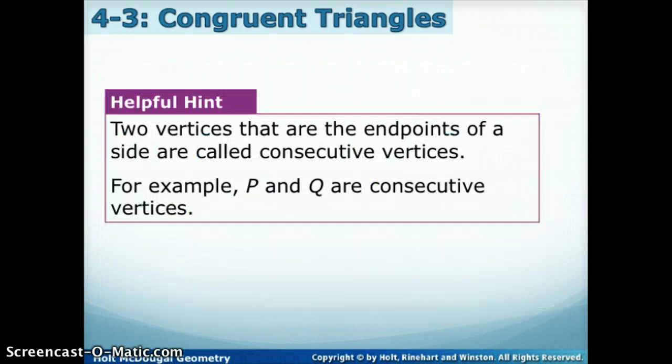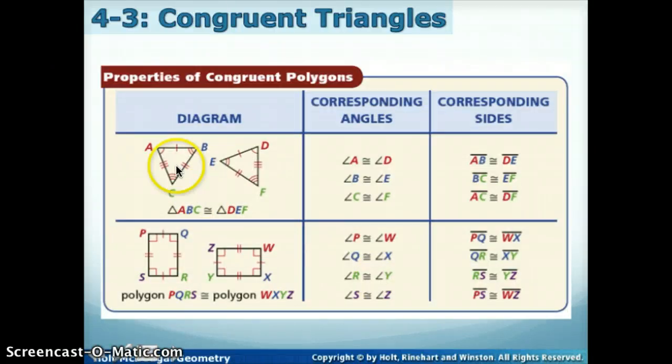So a helpful hint: two vertices that are the endpoints of sides are called consecutive vertices. So if you look at these, A and B, since they're endpoints of the same segment, they're consecutive.